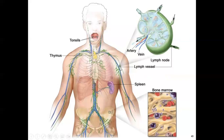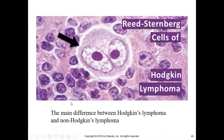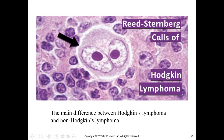A single lymph node is shown, but in lymphoma there is overgrowth or cancer of the lymphoid system. This picture shows the main difference between Hodgkin and non-Hodgkin lymphoma. Hodgkin lymphoma is a malignancy of lymphocytes marked by the presence of a characteristic cell called the Reed-Sternberg cell.